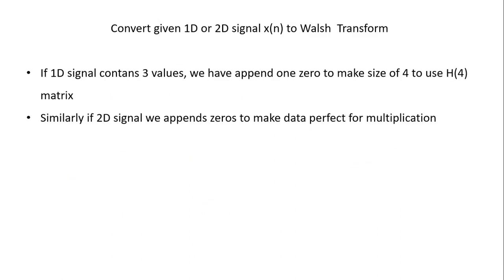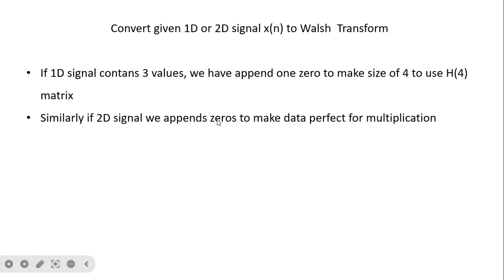In this way we can apply the Walsh transform. If a one-dimensional signal contains three values, we append one zero to make the size a power of 2 — for example, size 4. We can use any combination like W1, W2, W4, W8. Similarly, we can append the necessary zeros for two-dimensional signals. This is all about the Walsh transform: how it is obtained from the Walsh-Hadamard transform and how we convert signals from the time or spatial domain to the Walsh domain and back. Thank you.